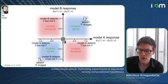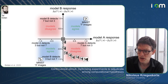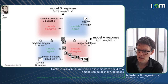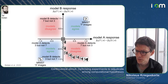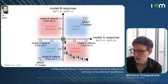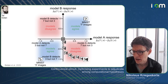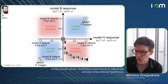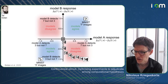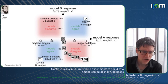To create controversial stimuli, we start from a random stimulus and then iteratively optimize the controversiality index to create images like this one, which are controversial between two models. Here's an example of a stimulus that model A assigned high probability to for containing a seven but not a three, while model B saw a three there but not a seven.